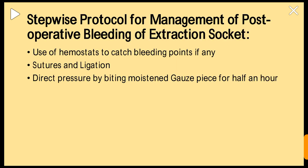Once the patient returns to the clinic complaining of bleeding of the extraction socket, use a good light source to identify bleeding points. If bleeding points are not in the socket, they may be in the gingiva or soft tissues. For a bleeding socket, options include bone wax to plug the socket, sutures and ligation, and pressure by biting on a gauze piece.